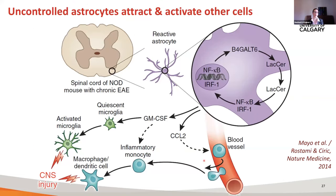In this study, they showed that in the EAE model, these astrocytes becoming reactive can go out of control — a vicious cycle. A particular factor makes them activate themselves even more, and this self-amplifying astrocyte activation leads them to produce all these factors: CCL2 is one, but there are others that attract monocytes and also activate microglia, which then contribute to this whole inflammatory response going on in the tissue.